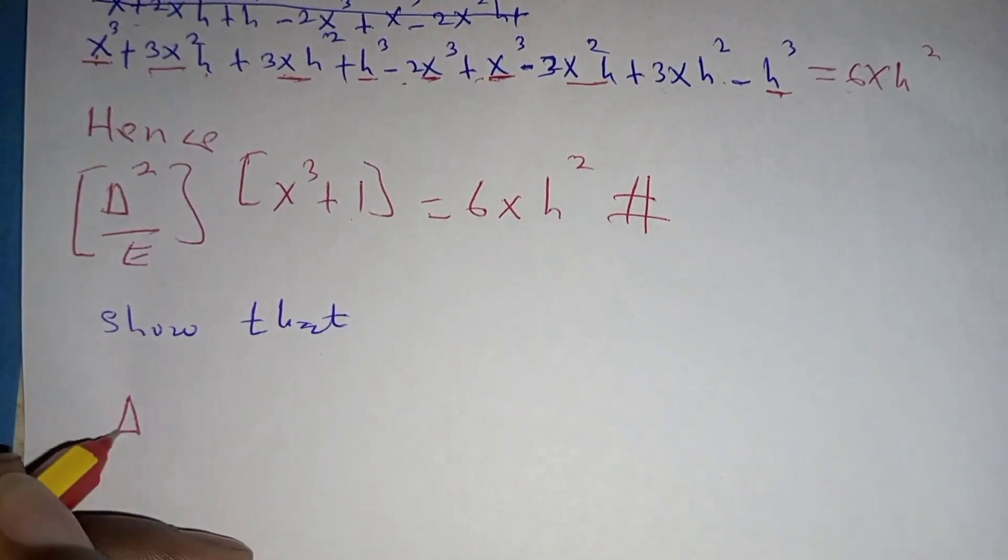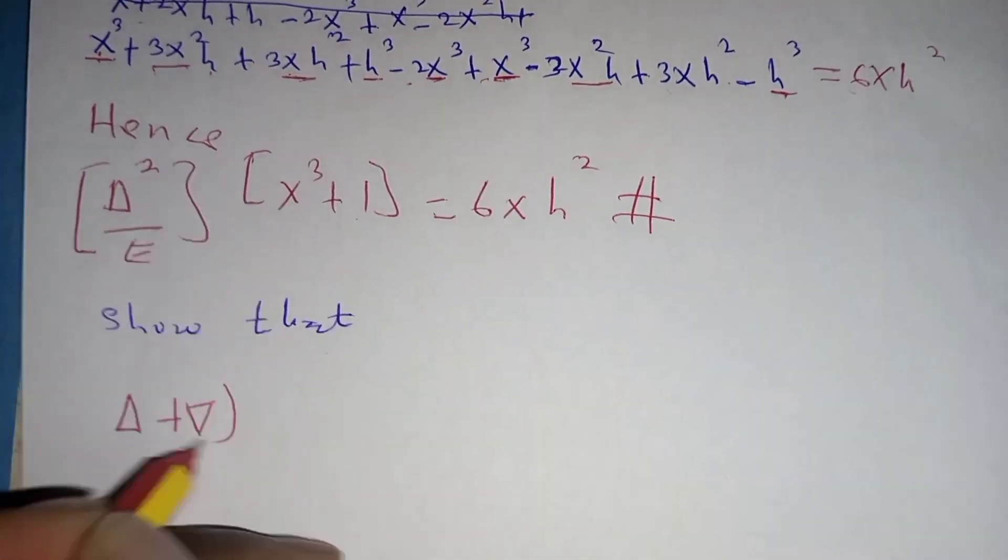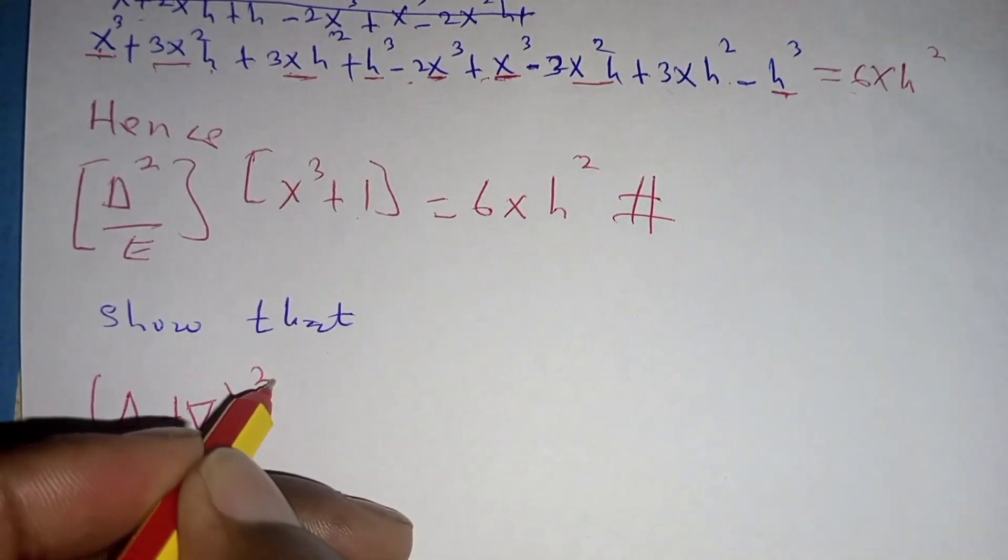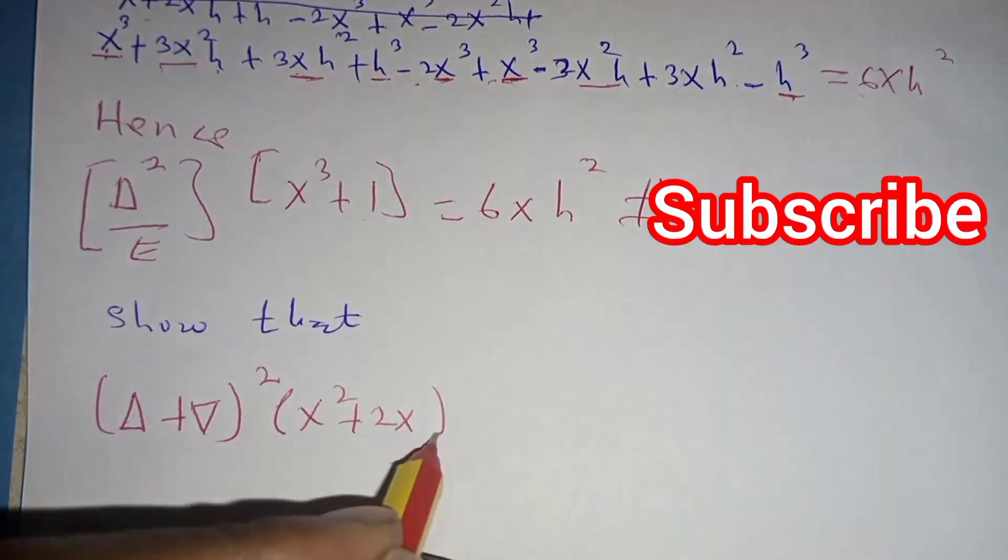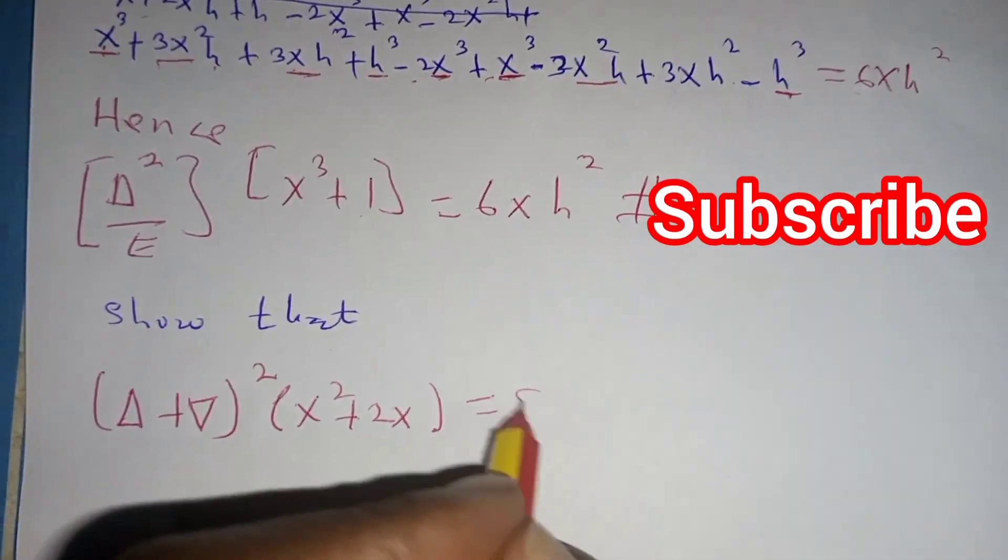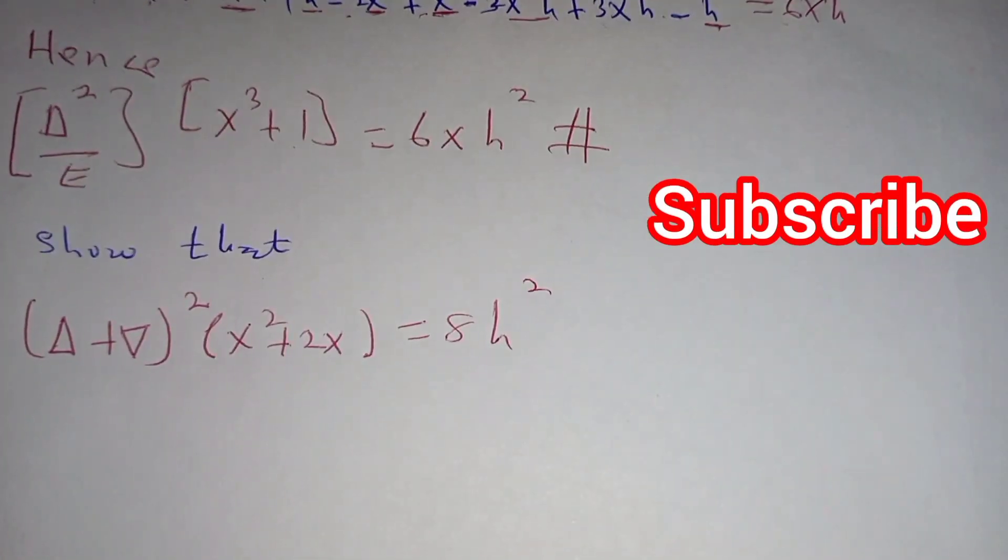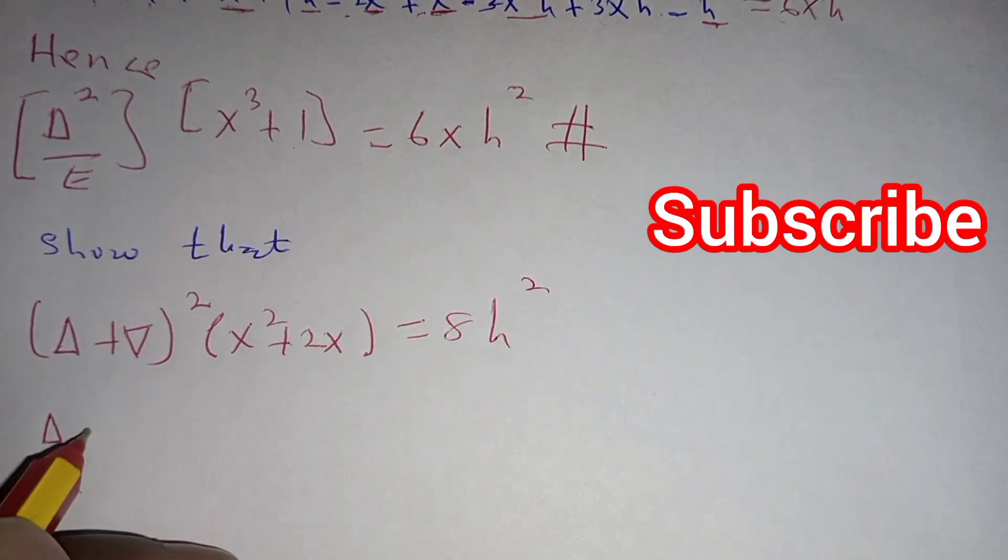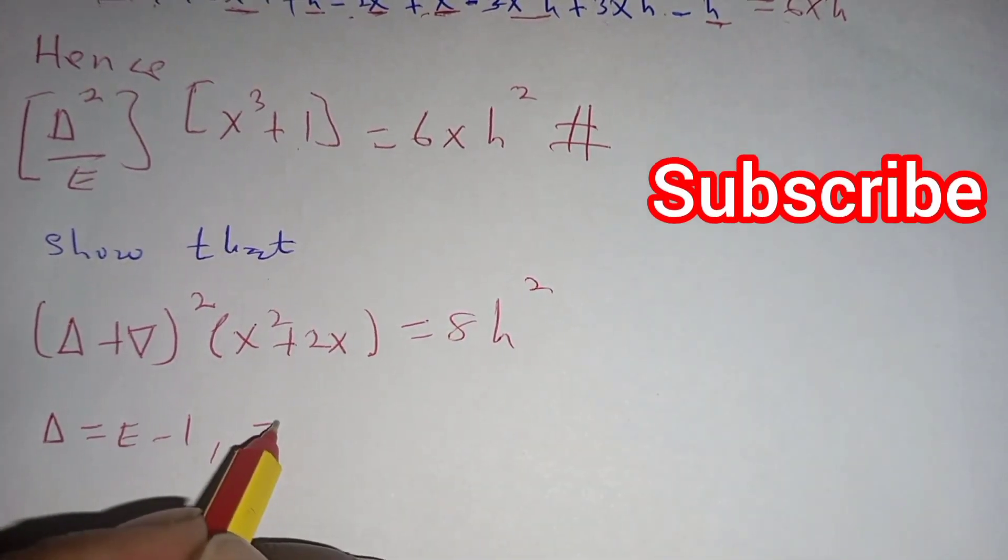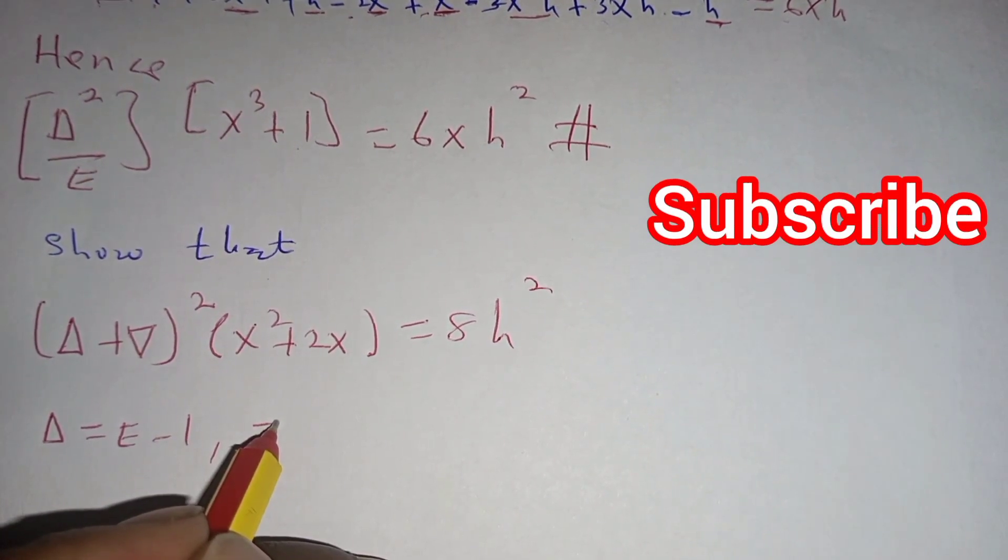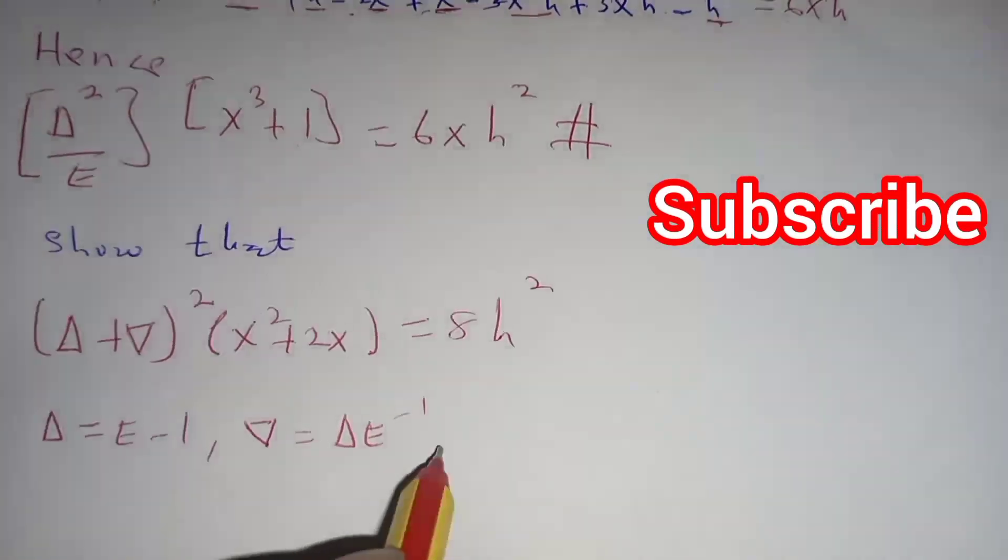I want to give you what to do. When you are being given the forward difference operator multiplying by backward difference operator squared, you multiply this by x squared plus 2x, the answer is equal to 8h squared. Do it and let me get the result using this hint. So this is the hint which you can use.